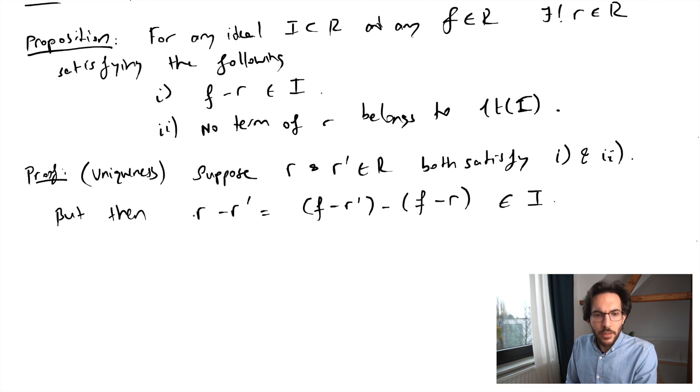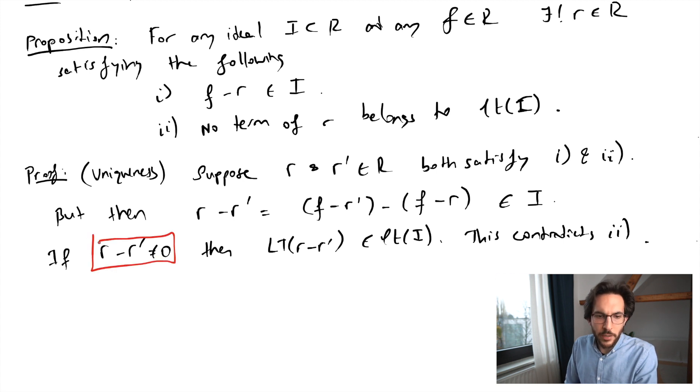But if R minus R' was non-zero, then the leading term of this expression would have to belong to the leading term of i. But this contradicts condition 2. So none of the terms in R or R' were inside of this ideal of leading terms. So this cannot happen. So we've contradicted that R minus R' is non-zero. Therefore R and R' must be equal. This proves uniqueness.